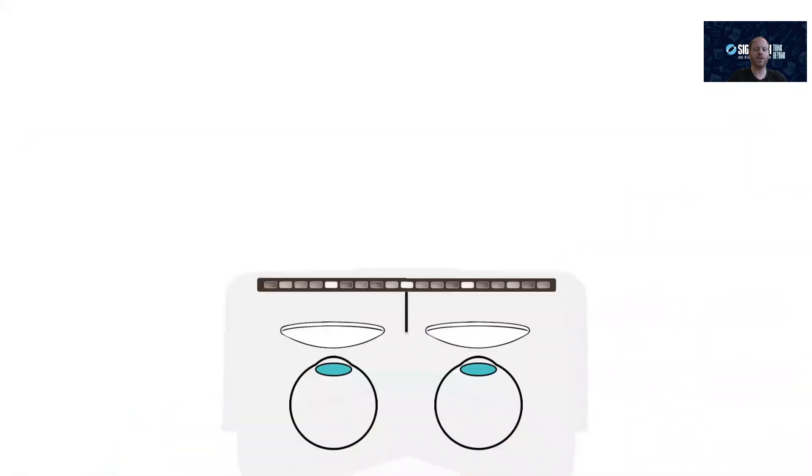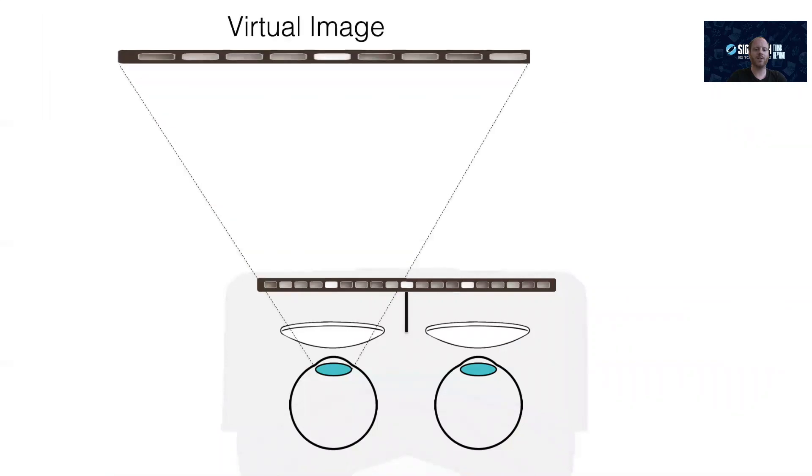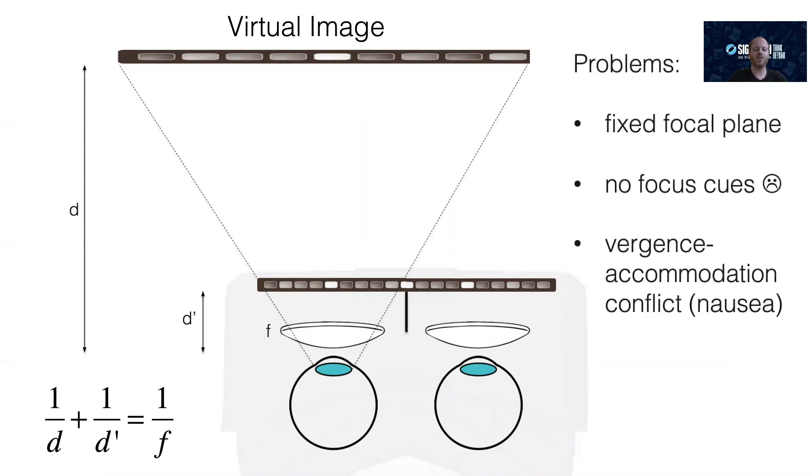Almost all near-eye displays are based on the magnifier principle. You basically look at the virtual 2D image of a micro-display created by a magnifying lens. This fixed focal plane design is not natural. In the real world, our eyes focus, or accommodate, to arbitrary distances, depending on how far away the object is that we look at. Keeping the accommodation of the eyes fixed leads to the vergence-accommodation conflict, which results in eye strain, visual discomfort, double vision, reduced visual clarity, and other negative effects.